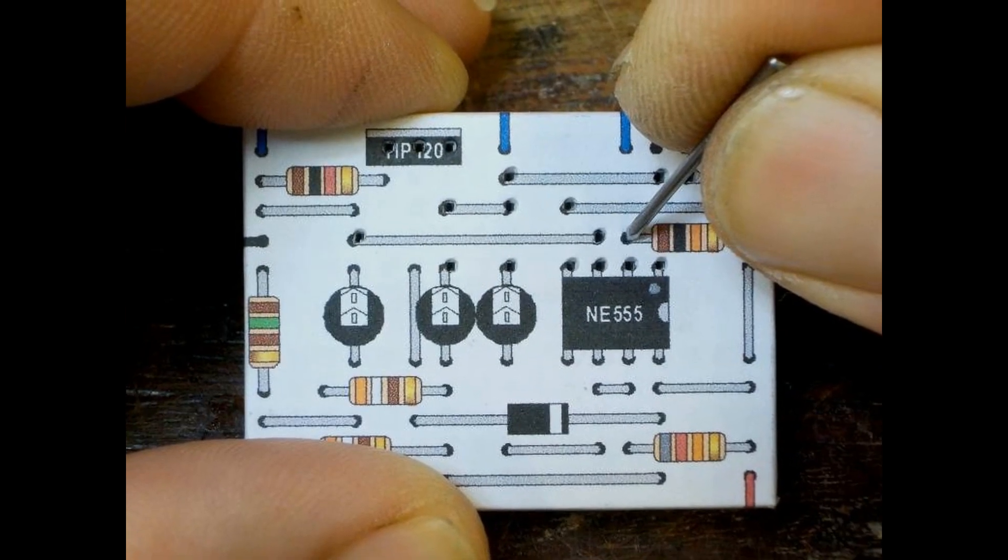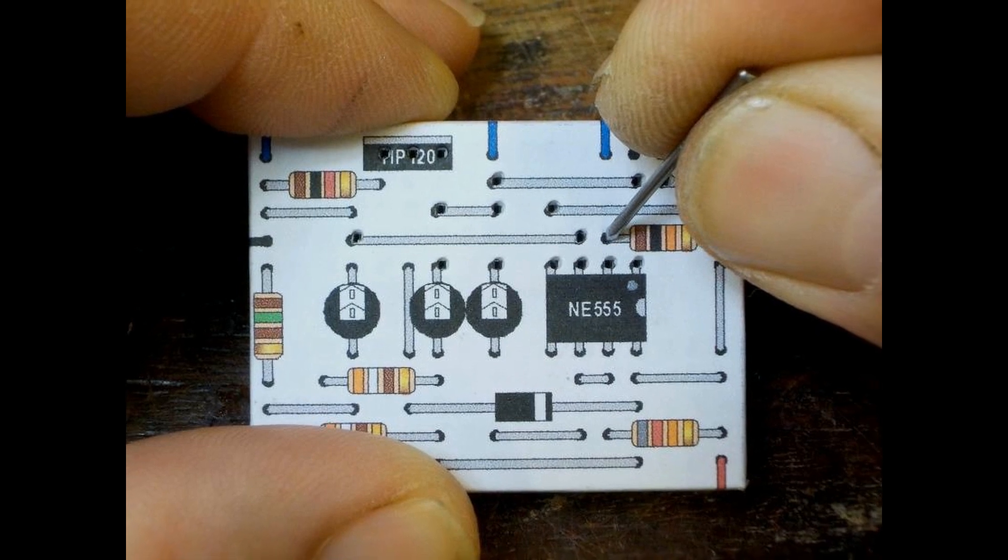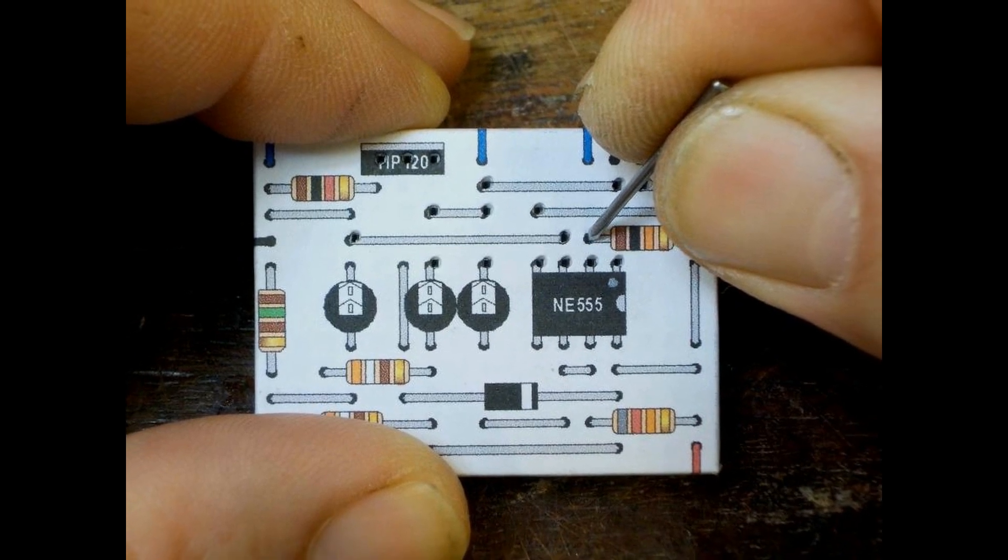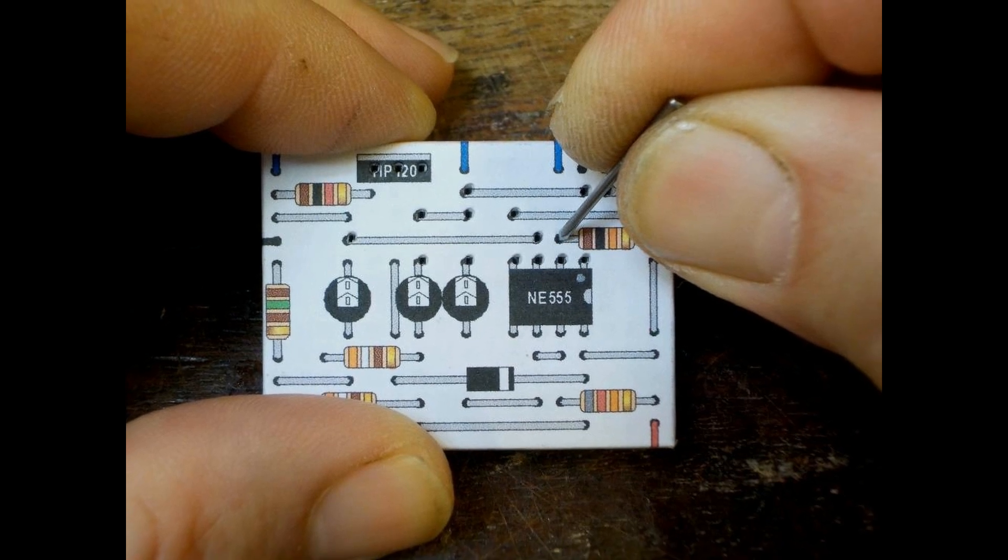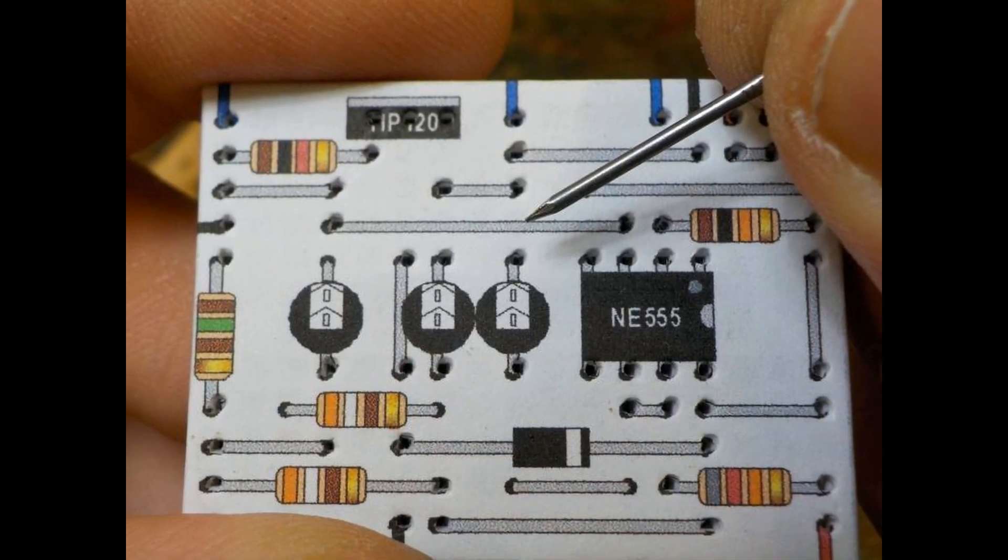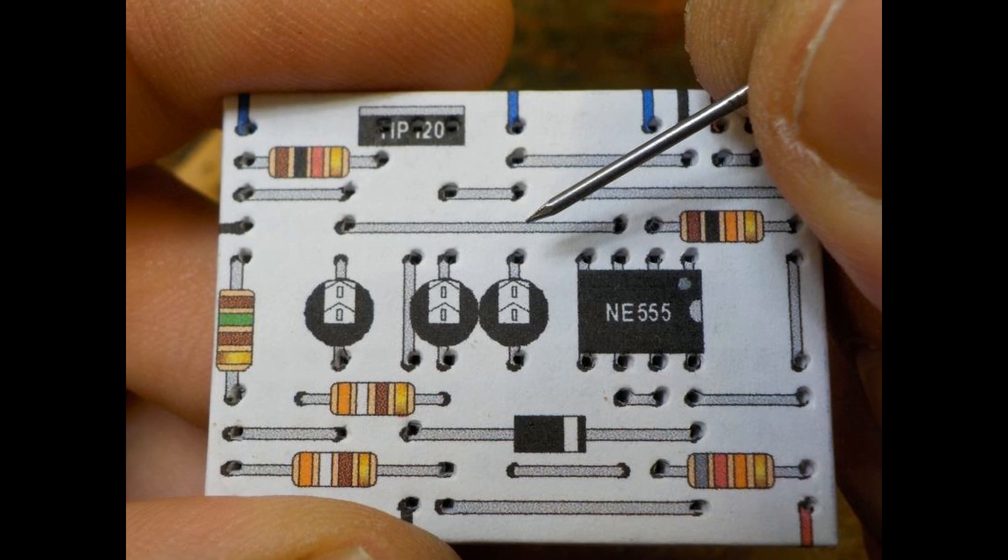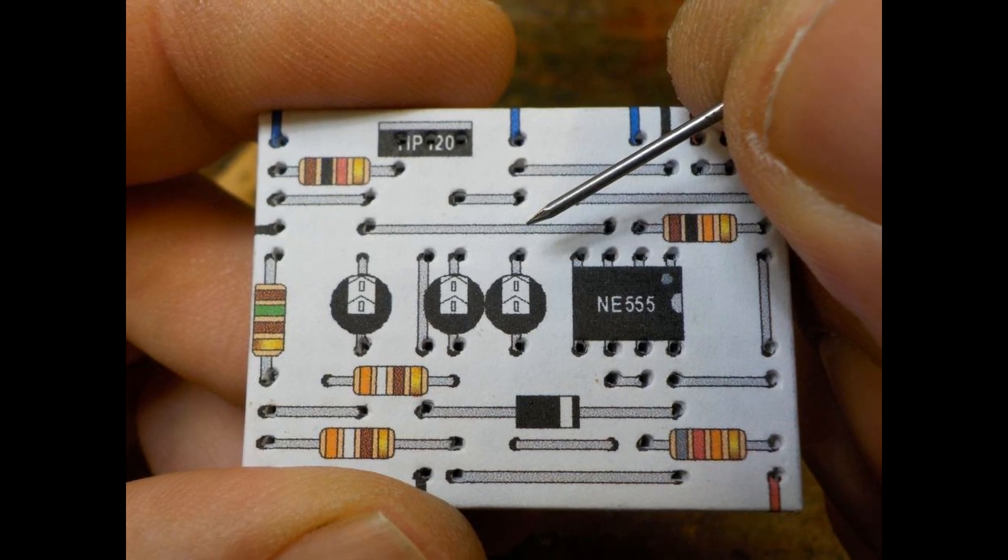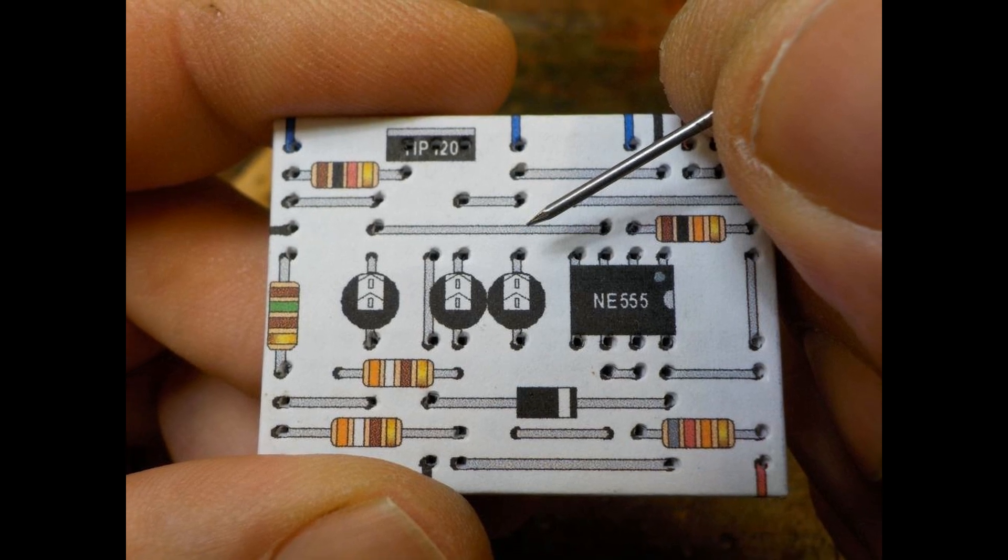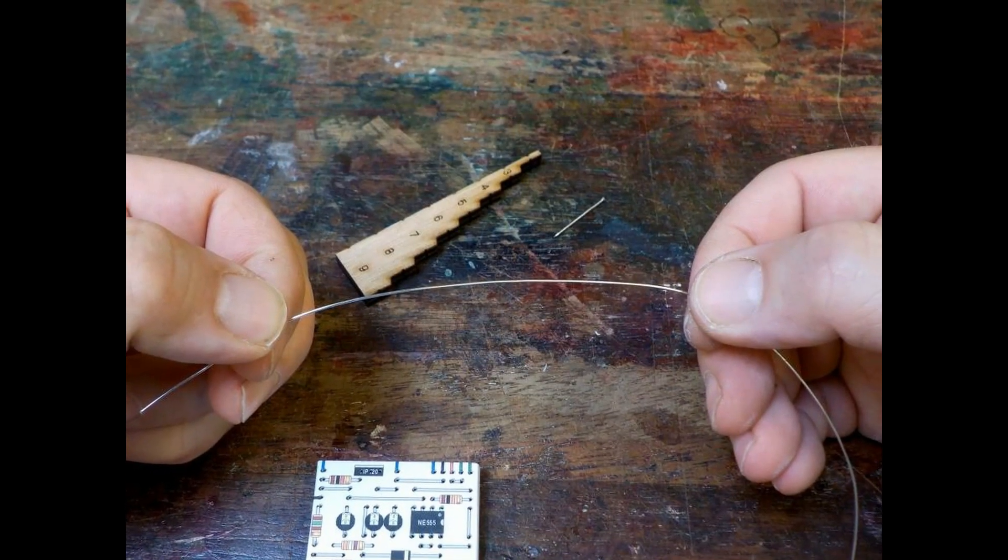And here it is. Now get the supplied nail and puncture the label wherever there is a dot. This will help the legs of the components and wires push easily into the breadboard. We are now ready to start constructing the circuit. I suggest putting in the wire links first. These are represented as grey lines, hopefully with a hole at each end.